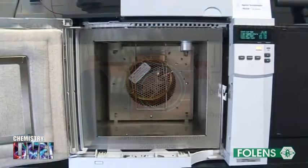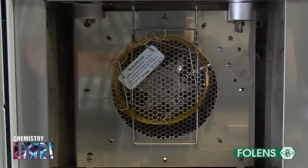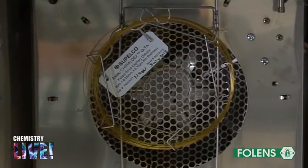This coiled tube of small diameter and several metres in length is inside a temperature controlled oven. The coiled tube in this instrument is shown on the screen.